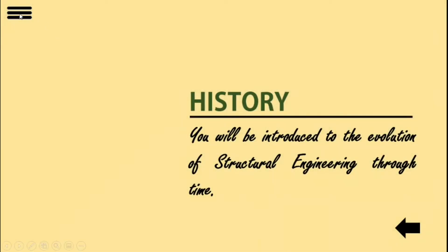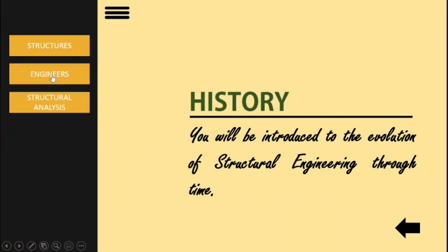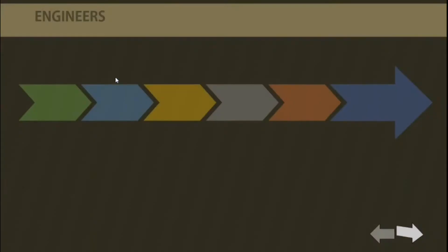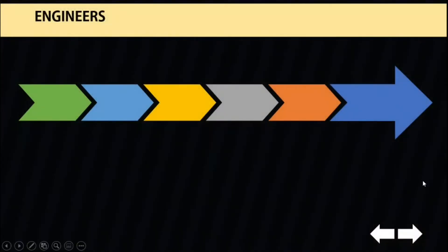Moving to our next topic are the famous engineers who molded the surface of the Earth. To know the historical perspective on structural engineering, we will briefly go through the evolution of structural systems from the trial and error designs used by ancient Egyptians and Greeks to the highly sophisticated configurations used to date.